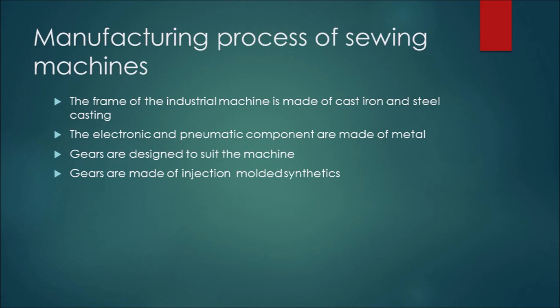I'm going to talk about the manufacturing process of sewing machines. The frame of the industrial machine is made from cast iron on a computer numerical control. To manufacture the frame, you have to get the steel casting, grinding, heat treating, and polishing to finish the frame.